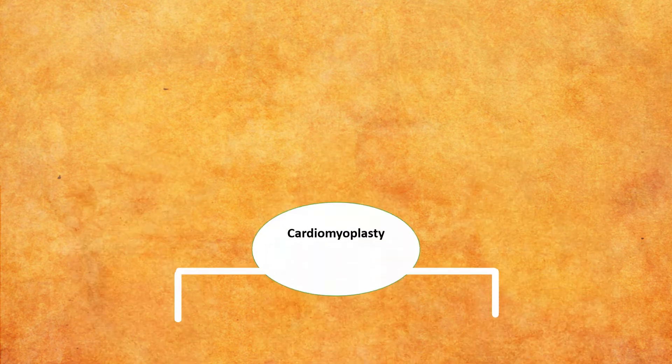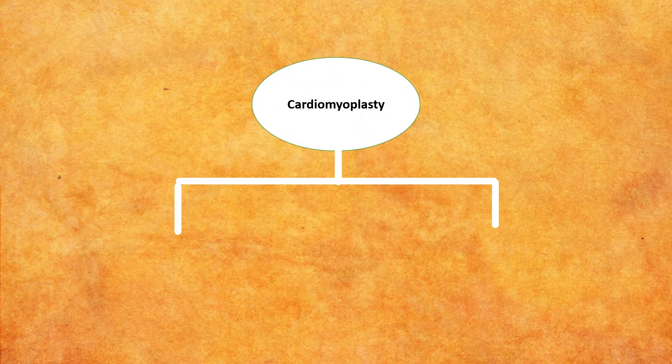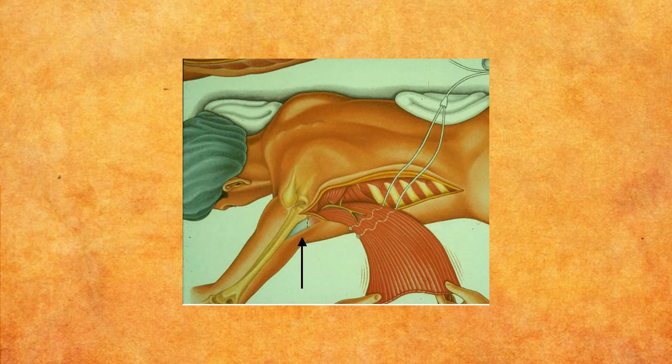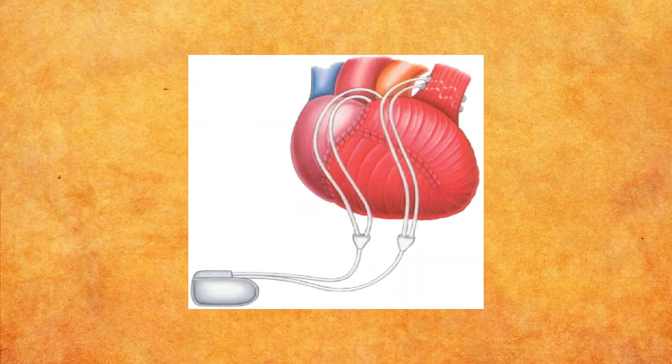There are two methods of performing a cardiomyoplasty: a dynamic cardiomyoplasty and a cellular cardiomyoplasty. A dynamic cardiomyoplasty is when a muscle called the latissimus dorsi in the back is taken and wrapped around the heart, then stimulated to contract with the heart via pacemaker. This will improve the functioning of the heart.